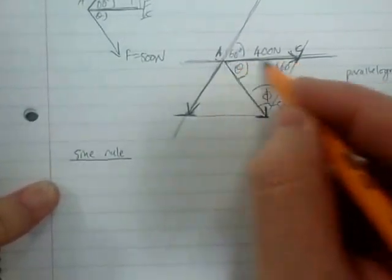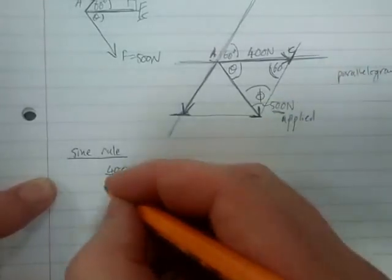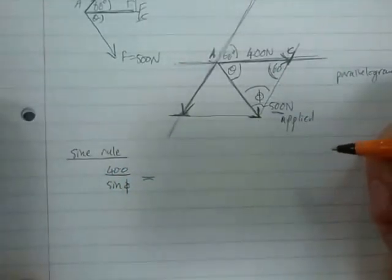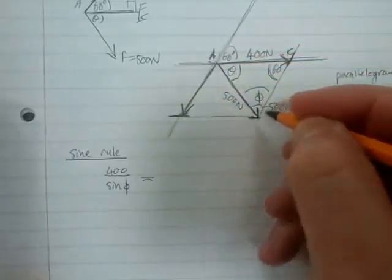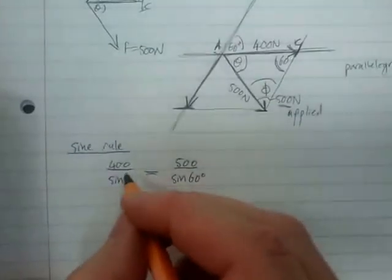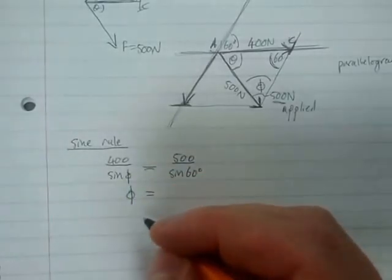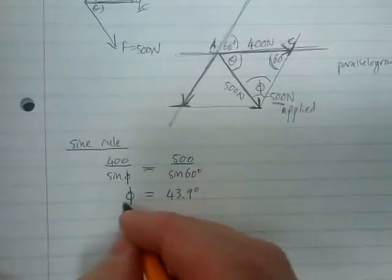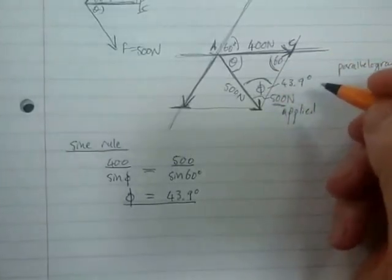Let us use the sine rule to solve this problem. We know the magnitude of that side is 400. So it's 400 over sine phi equals 500 over sine 60. If we calculate phi, that turns out to be 43.9 degrees. So this angle here is 43.9 degrees.